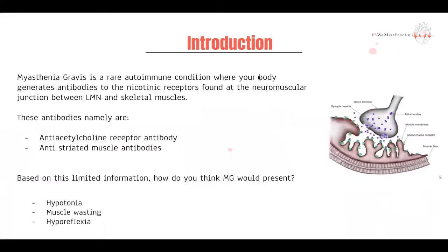So what is myasthenia gravis? Myasthenia gravis is an autoimmune condition where you start generating antibodies to the nicotinic receptors. These nicotinic receptors are typically found on the post-synaptic neuron at the neuromuscular junction — the junction between your lower motor neuron coming from your spinal cord and supplying the skeletal muscle. The antibodies generated, important for diagnostic purposes, are the anti-acetylcholine receptor antibody and the anti-striated muscle antibody. About 85 to 90% of people with myasthenia gravis would return a positive test result on this.